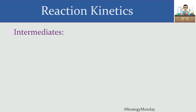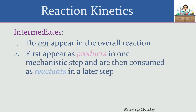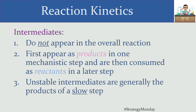An intermediate is a little bit different. Even though it also doesn't appear in the overall reaction, the intermediate gets produced somewhere along the line — it first appears as a product in one step, and then gets consumed again as a reactant. Like a catalyst, it appears on both sides of the reaction arrow and those instances cancel out. But the order of appearance matters: it first pops up as a product, then disappears as a reactant.